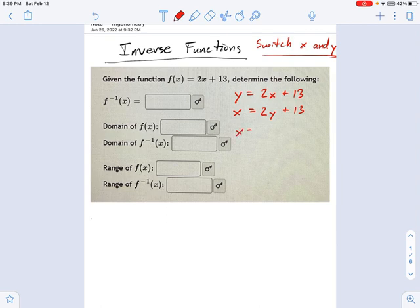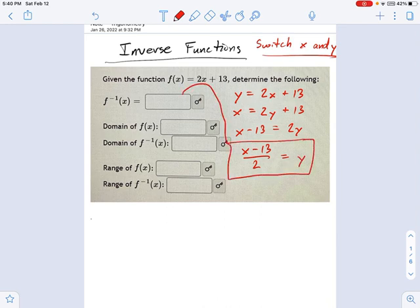I try to get y by itself. So that means x minus 13 equals 2y. And that means x minus 13 over 2 equals y. Okay, see this right here? That is the inverse that we just found for f.